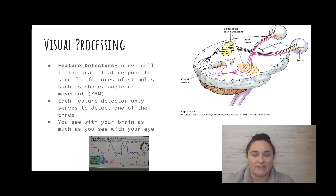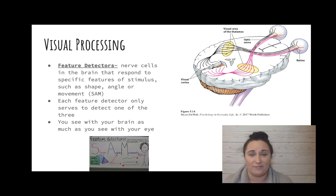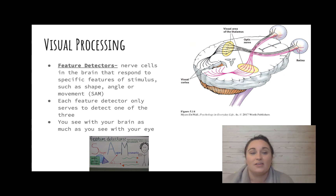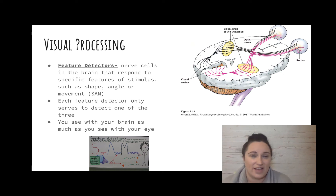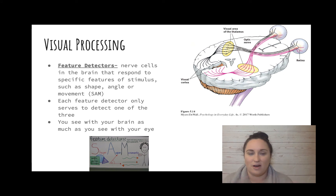Next is how we process that visual information. In the visual cortex, we have more specialized nerves. We have nerve cells in the brain that respond to specific features — I like to think of it as SAM: shape, angle, and movement. That means we have a specialty nerve just for shape, just for angle, and just for movement. You really see with your brain just as much as with your eyes — damage to your occipital lobe can cause blindness.